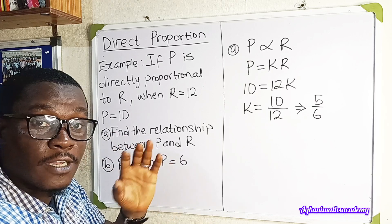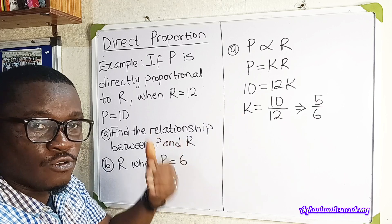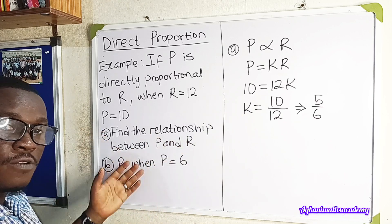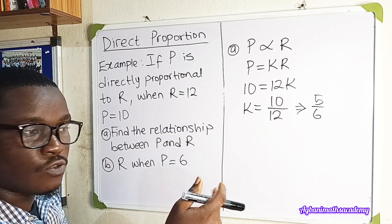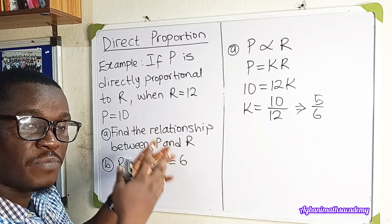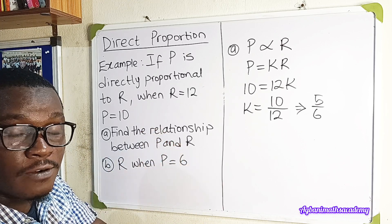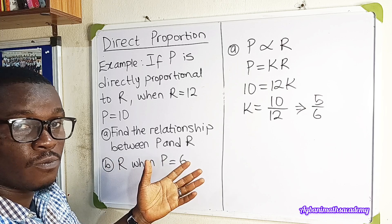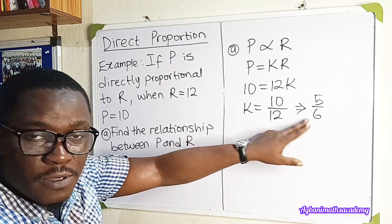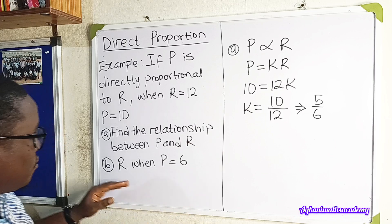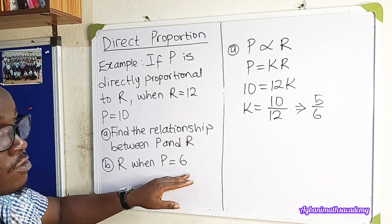K is a constant — it does not change. K is what we use to find one value when the other is known. If P is missing, we can find P if we know R. If R is missing, we can find R when we know P, using the constant of proportionality. Now we are told to find R when P is equal to 6.